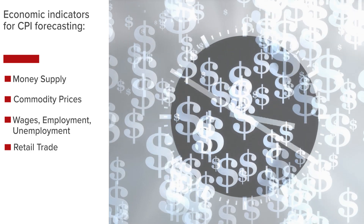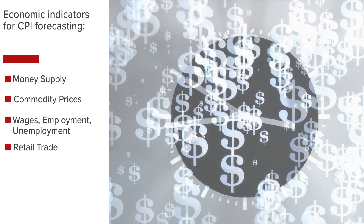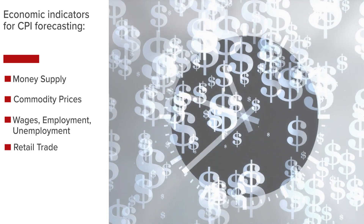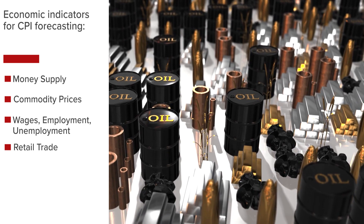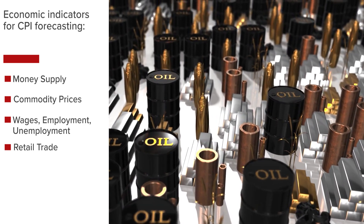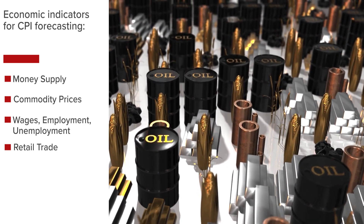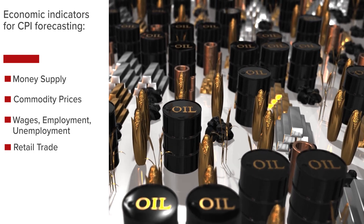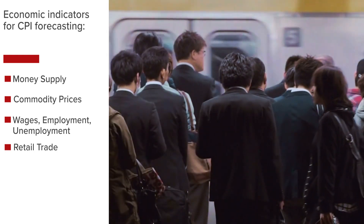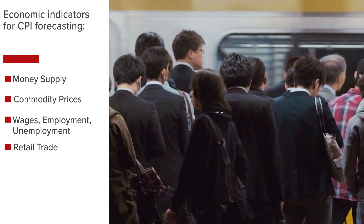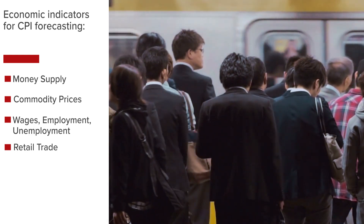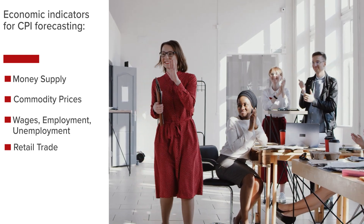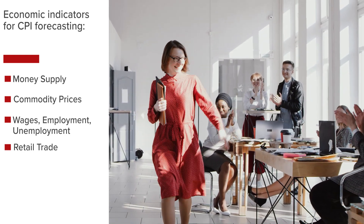A prediction of CPI can be made by examining the money supply to see if there is inflation risk arising from an increase in money supply without a corresponding increase in productivity. Because commodity prices serve as inputs to many goods and services, forecasters can estimate future consumer prices by analyzing daily commodity prices. The tightness of the labor market could be measured by tracking wages, employment, and unemployment. The combination of increasing wages coupled with a tight labor market can lead to tenacious and more difficult-to-control inflation.